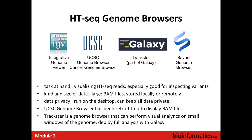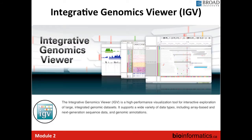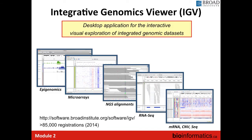Let's talk about IGV. All slides with the Broad Institute logo are borrowed from the Broad website for educational purposes — that's where IGV was developed. IGV is an Integrative Genomics Viewer: a high-performance visualization tool for interactive exploration of large integrated genomic datasets. It supports a wide variety of data types including arrays, next-generation sequencing, and genomic annotation. It's a desktop application for interactive visual exploration of integrated genomic data, and you can upload a large range of data types: epigenomic data, microarray data, sequencing data, whole genome or exome, copy number, and more.